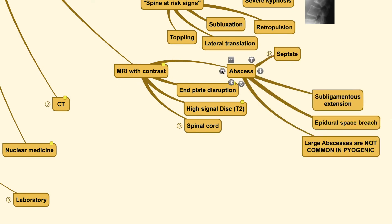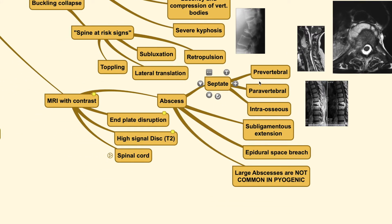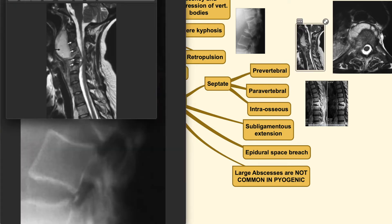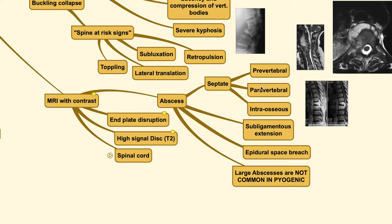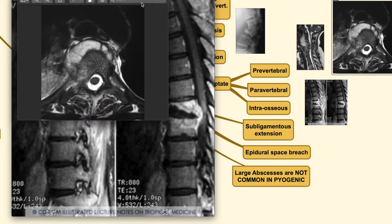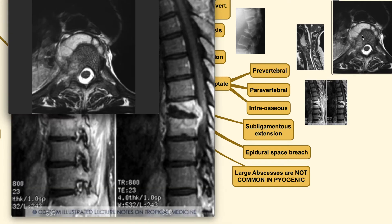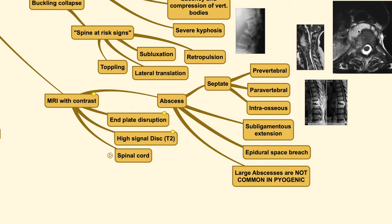For MRI with contrast, you can detect the abscess that forms in the spine. The abscess that forms usually has a septated appearance. You could find it at the pre-vertebral region or also at the para-vertebral region. This image shows the pre-vertebral region at the cervical level — a very large abscess pushing the anterior aspect of the vertebral body. It could also be intra-osseous, within the bone substance, showing a collection of pus around the bone. On axial view, you can clearly see a septated pus collection anterior to the vertebral body and underneath the ALL, which needs to be decompressed if troublesome.